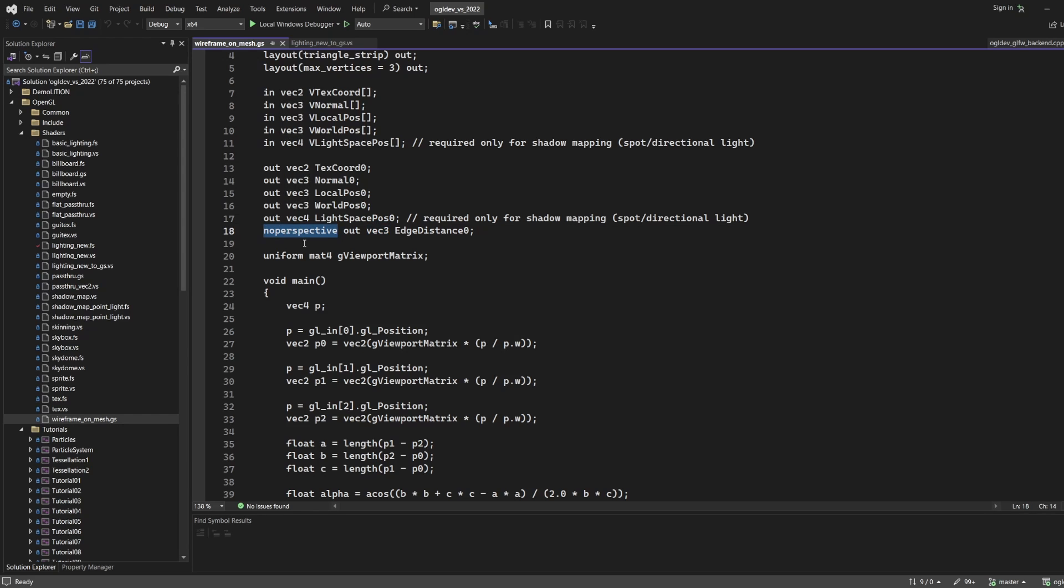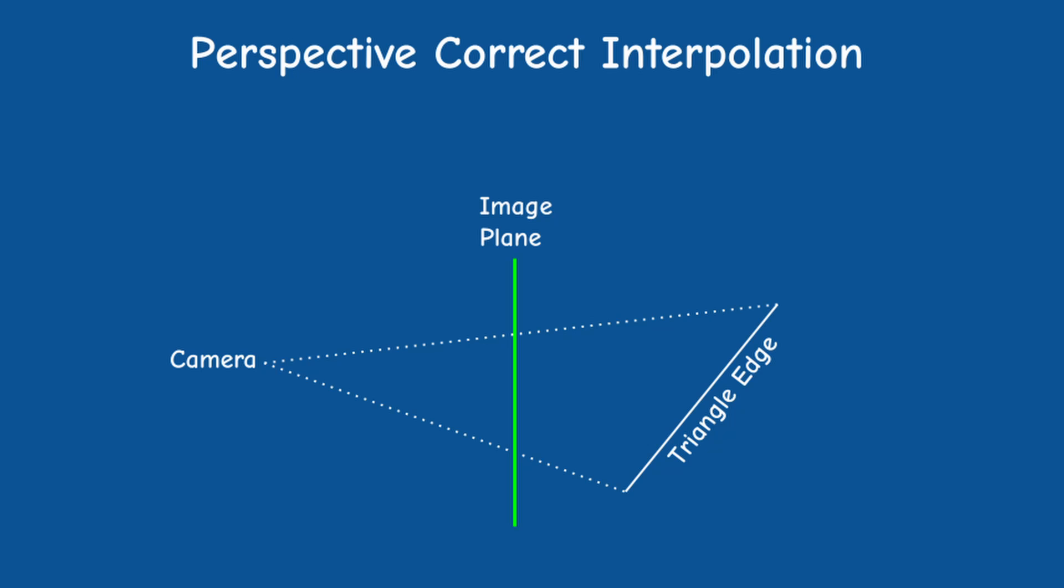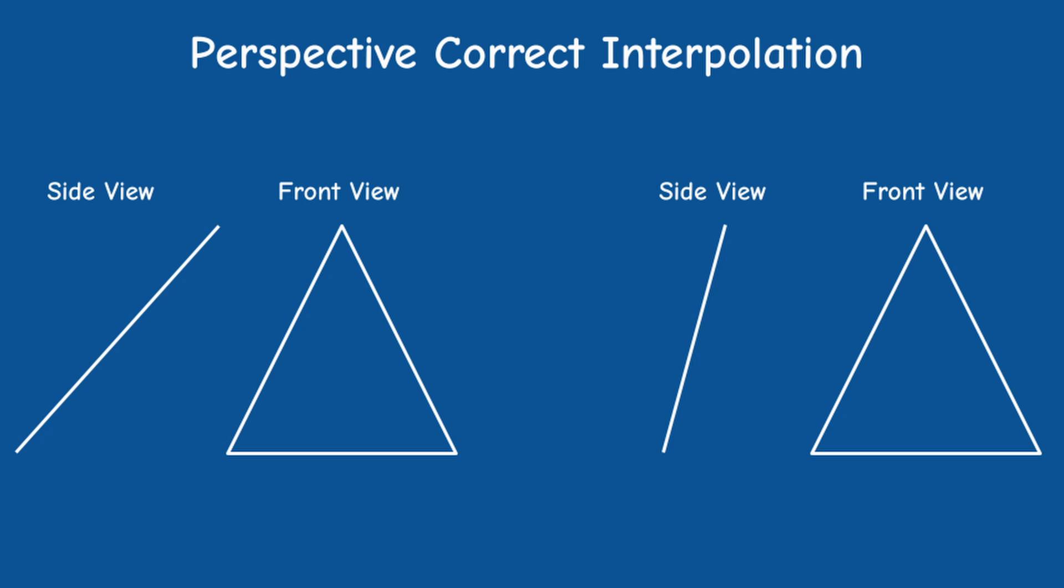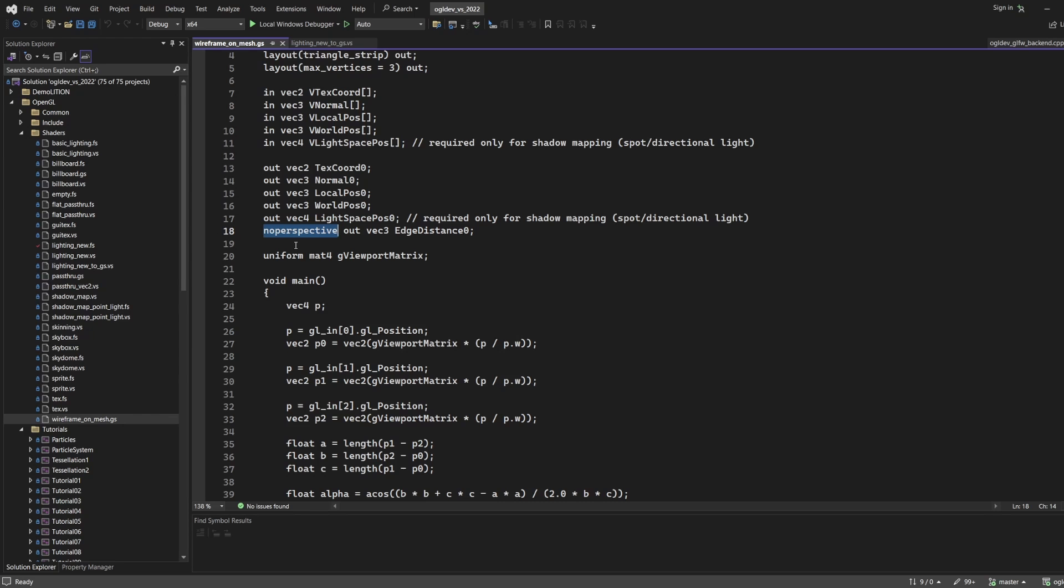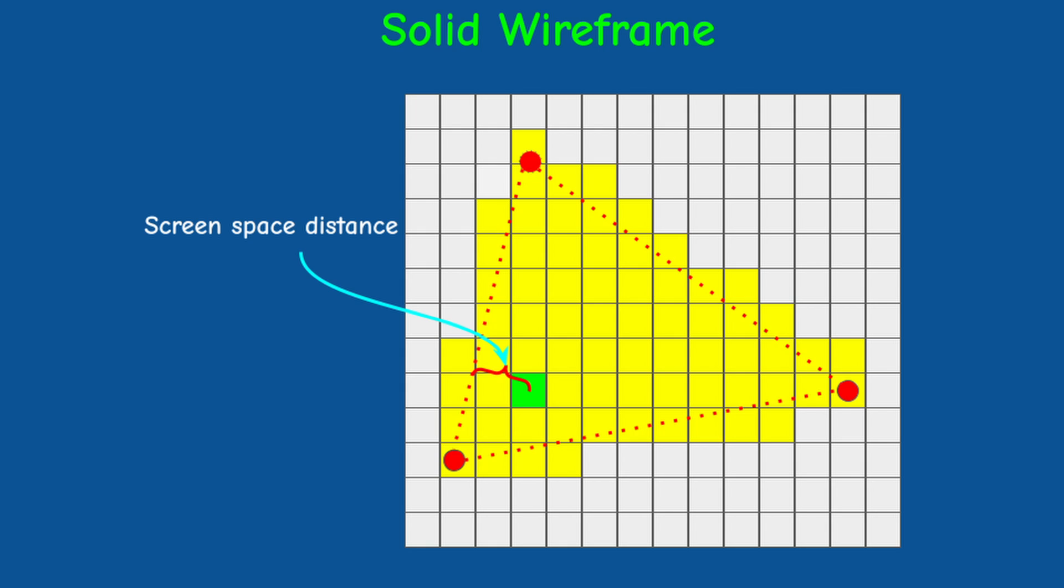Note that we have the noperspective qualifier before this attribute. By default, the rasterizer uses perspective correct interpolation. This means that the depth of the pixel is taken into account during the interpolation of an attribute. In the following image from scratchapixel.com, we can see the difference between linear interpolation and perspective correct interpolation. But in our case, we actually prefer the linear interpolation over the default, so we specify noperspective. We want to check the distance from the fragment to the edge in screen space, so perspective correct interpolation will skew the results.